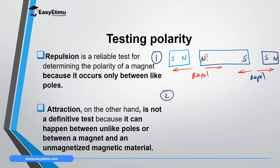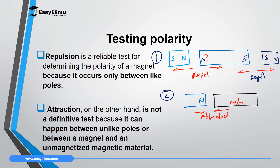Case 2: You have a material whose magnetic orientation you don't know. You bring a known north pole close to it, and you realize the magnet is being attracted. If this material is a magnet, it means the pole on that side is opposite to the pole you brought close — so it is south pole, and the other end will be north pole.